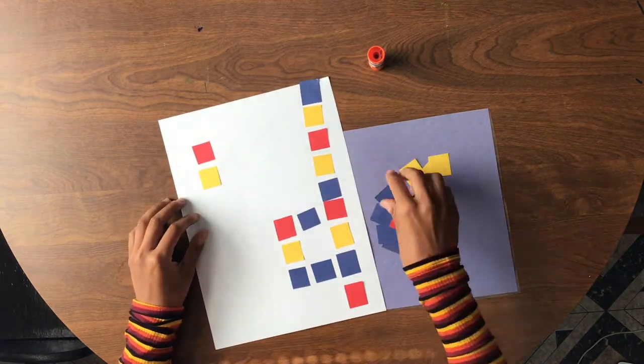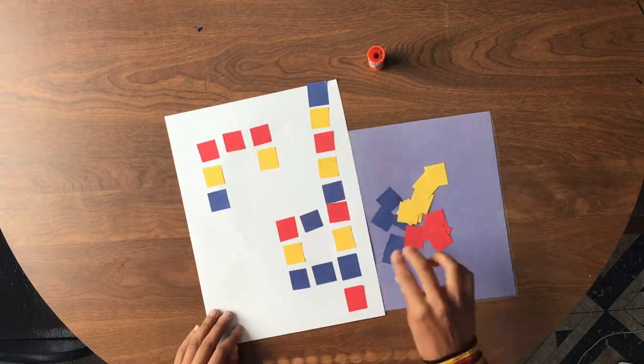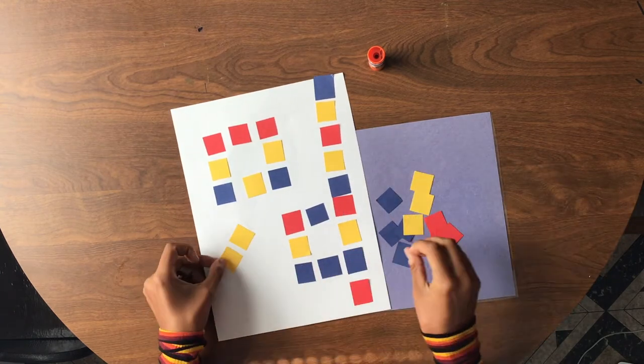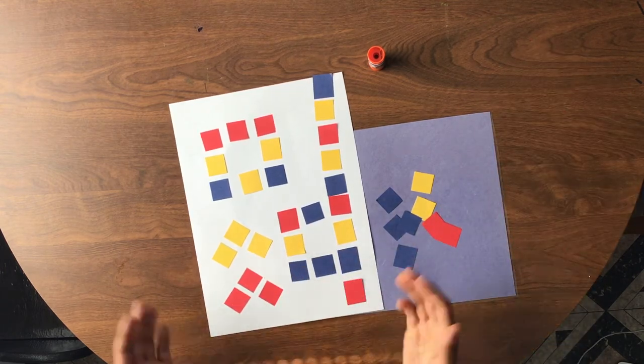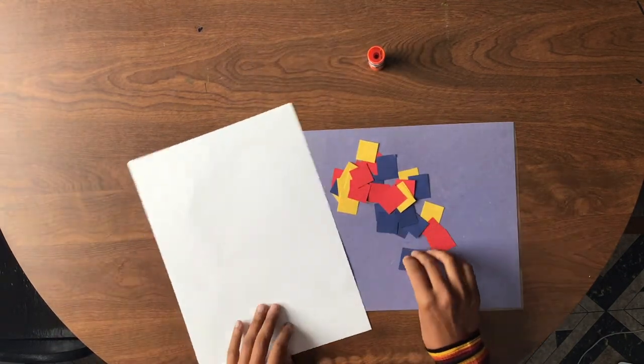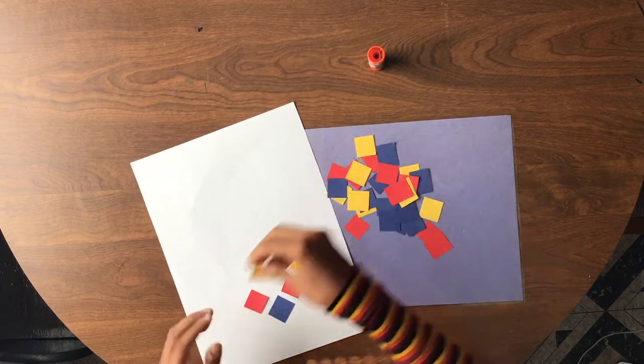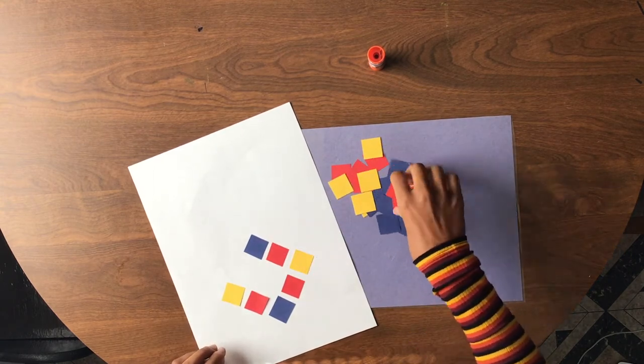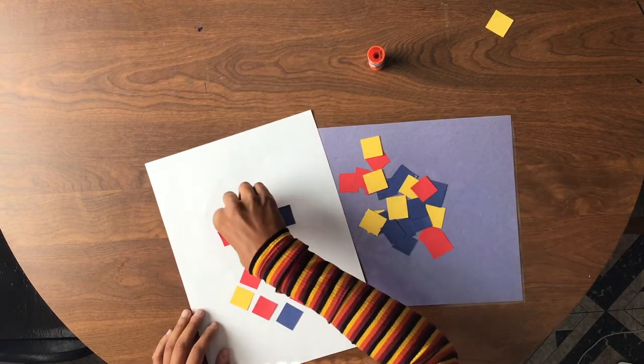I'm thinking right now. I'm taking my squares and I'm just putting them on my page. I'm turning them like diamonds. I'm trying to make other shapes with my squares. But if you don't like that design, you can start over. I'm starting a new design now.